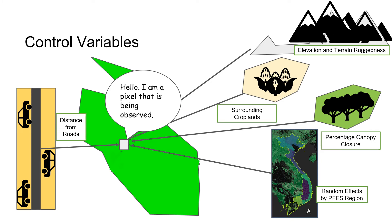In addition, we have a series of control variables — typical variables you would expect to affect the propensity for a forested area to be deforested. We look at the distance of a given pixel from roads, how much of the surrounding area is in cropland, the initial canopy closure, elevation, and surrounding terrain ruggedness — assuming that more rugged terrain makes harvesting harder or less attractive. Finally, we have random effects by PFAS region, and in the future we plan to increase that to random effects by province as we have bigger sample sizes.